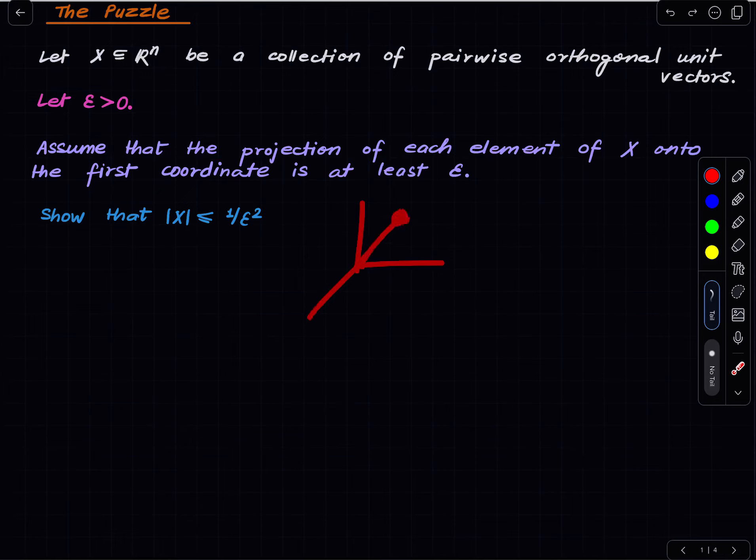So there is some, you take an element of X and project it down to the first coordinate. You do that with every element and every time you find that the length of the projection is at least epsilon.